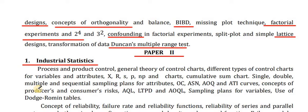Single, Double, Multiple, and Sequential Sampling Plans for Attributes, OC, ASN, AOQ, and ATI Curves, Concepts of Producer's and Consumer's risks, AQL, LTPD, and AOQL, Sampling Plans for Variables, use of Dodge-Romig tables.